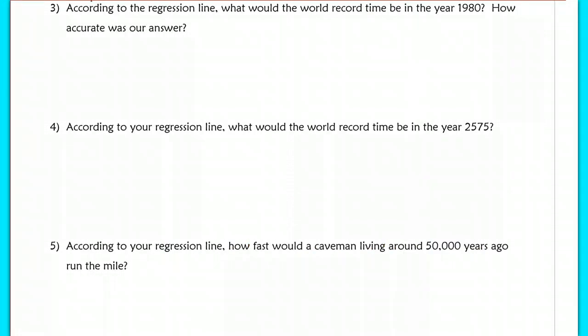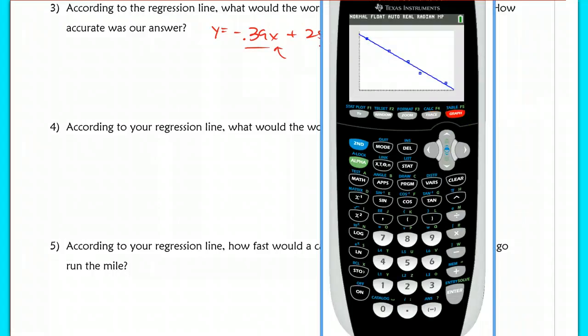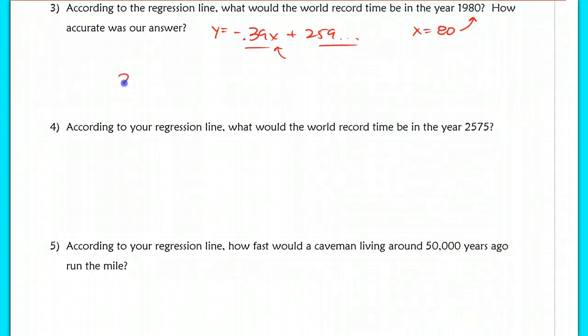Now, in problem number three, it says, according to the regression line, what would the world record time be in the year 1980? How accurate was our answer? Instead of using just the function and plugging it in like we would do previously in models, we rounded here in both parts. Instead of just plugging in an input of x equals 80, or t equals 80, instead of using that and just plugging it into this function and computing it using your calculator algebraically, I would rather you just get the exact number here by using your linear function from your graph. So this time we're going to hit second calc and just hit enter on the value because we can plug in x equals 80 now, and that will give us a y output. So we get 228.317, so 228.3 seconds.